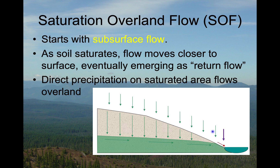The other thing that happens is that if you've got return flow going on — saturation overland flow — and it's still raining, any rain that falls on that saturated area can't infiltrate, so it becomes direct runoff into the stream via overland flow. So there are really two processes that together we call saturation overland flow: return flow, which has been subsurface flow and is now returning to the surface, and direct precipitation on the saturated area, which never goes underground and quickly enters the stream.